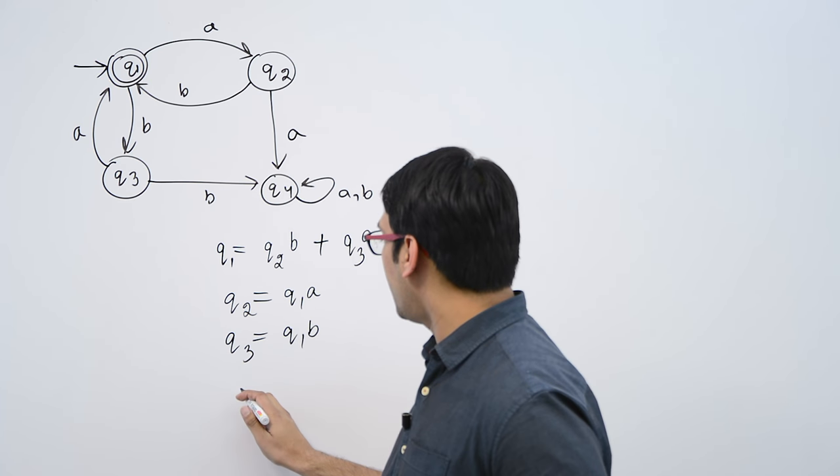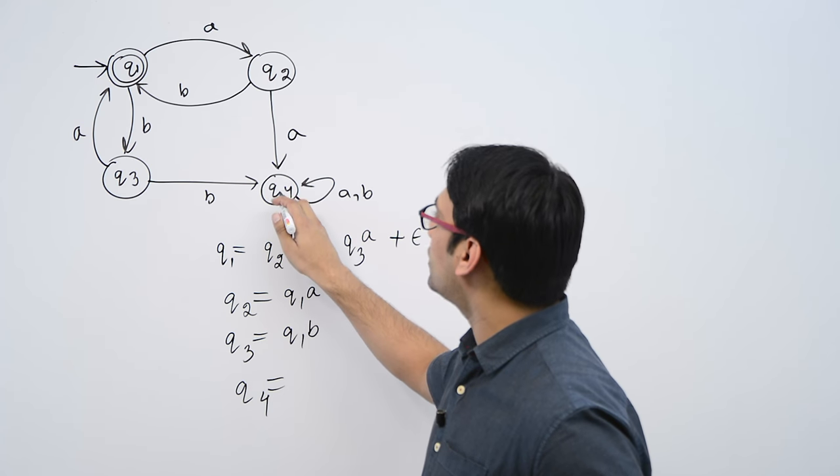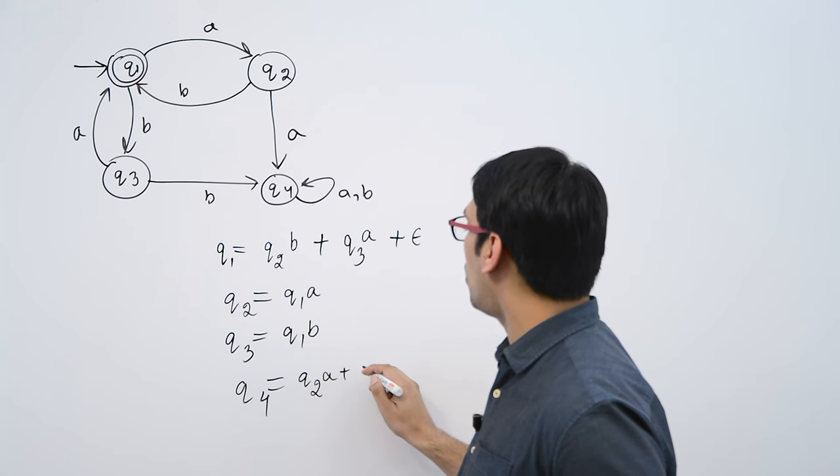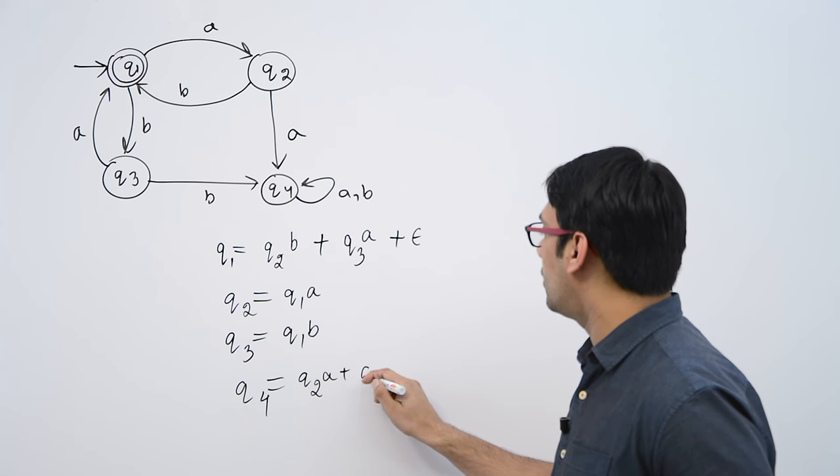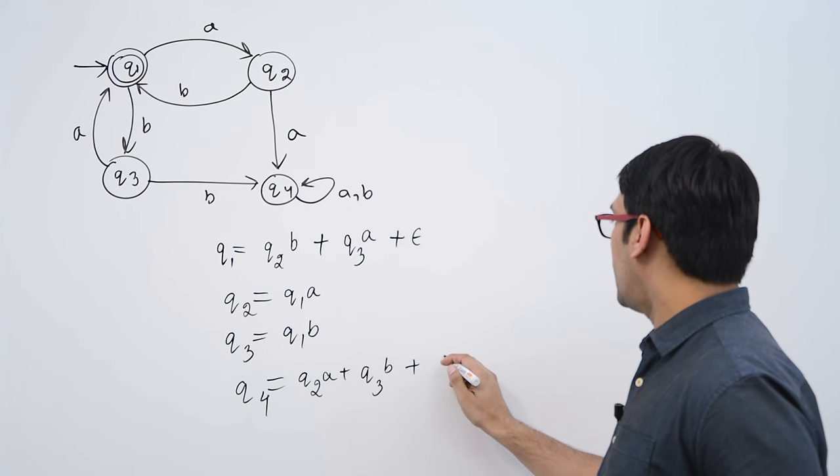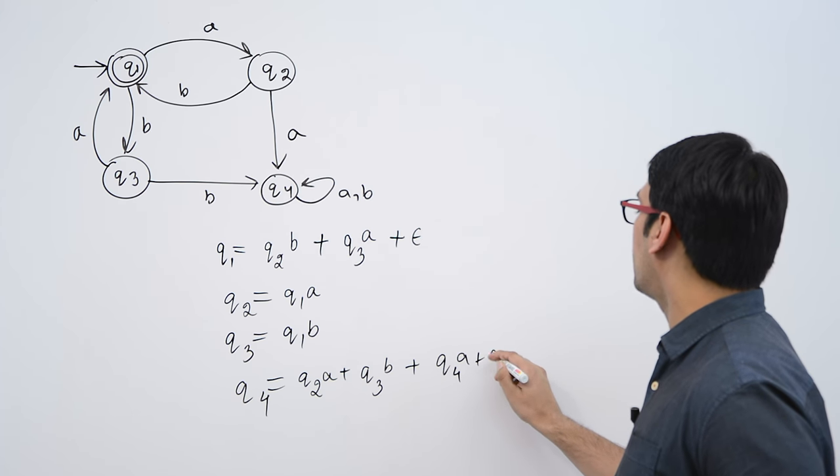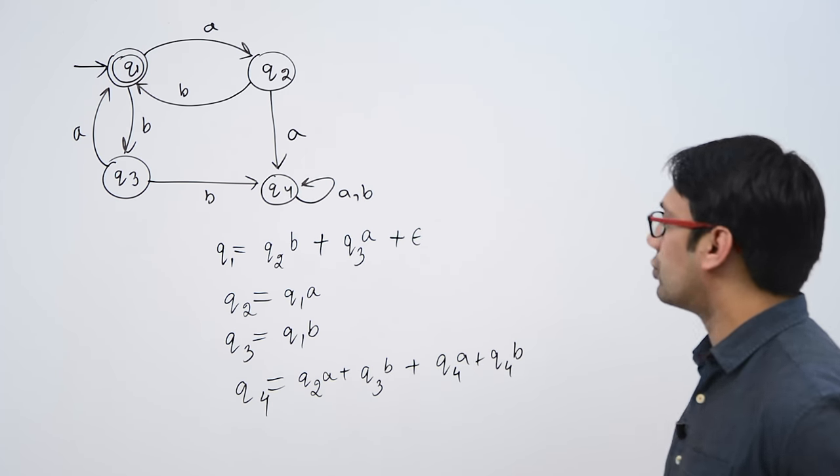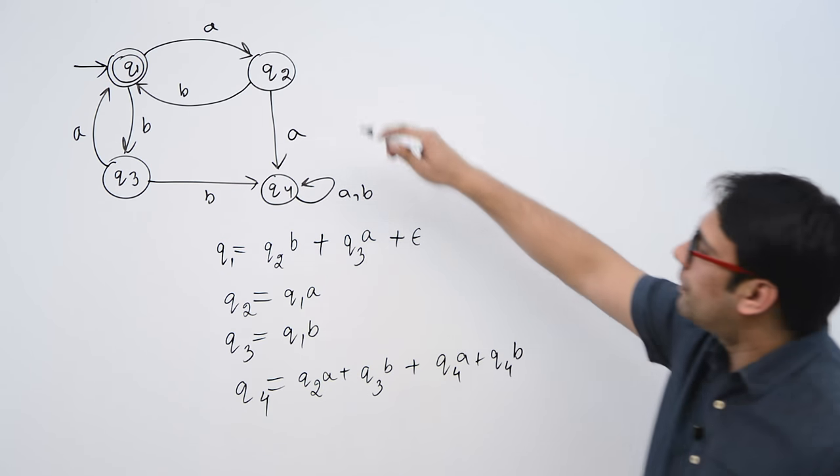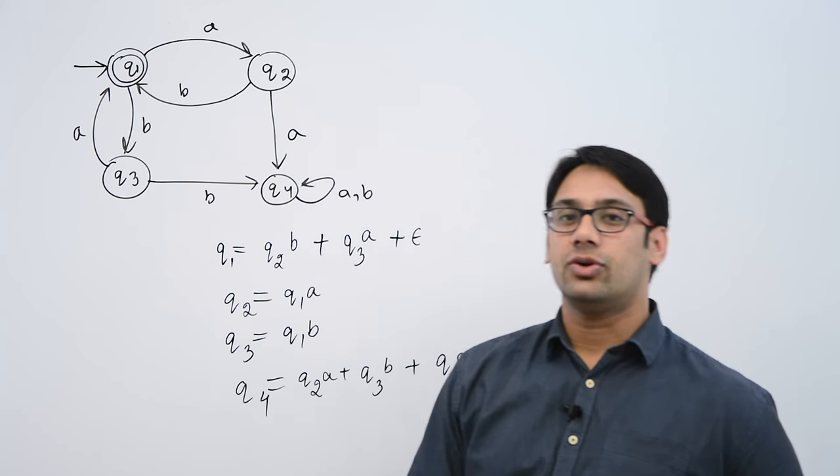In the same way for q4 you can only reach q4 if you see an a on q2 or you can see an b on q3 or b at q4. So this is the only method. Here in this complete finite automata there is only one state which is the final state that is q1.